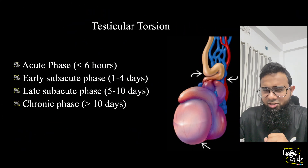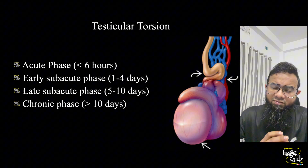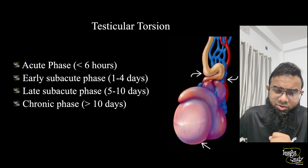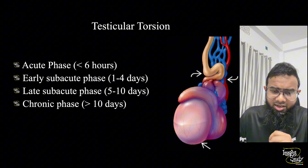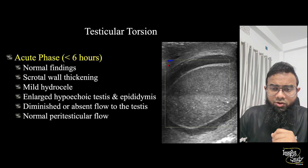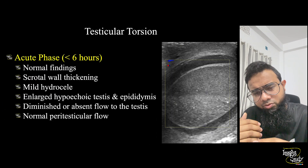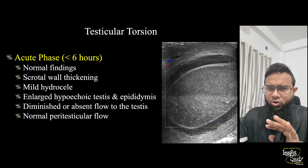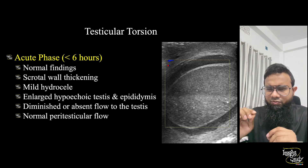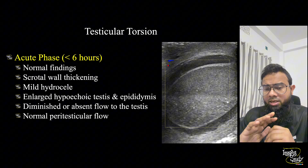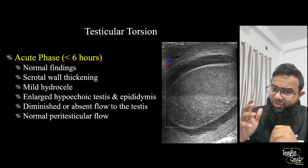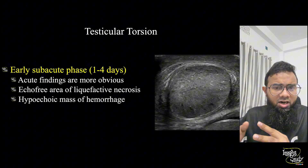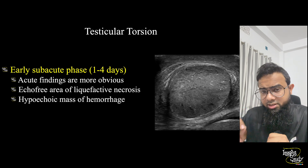Let's talk about the stages of testicular torsion. There are four stages: acute, early subacute, late subacute, and chronic. Our patient presented in the early subacute phase. In the acute phase, the patient comes within less than six hours and you see almost normal findings — possibly some fluid collection or scrotal skin thickening, but no testicular appearance changes. On color Doppler you won't see any intratesticular vascularity.